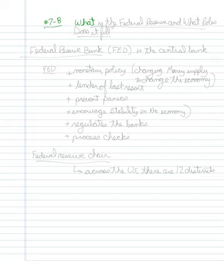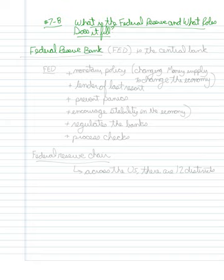Now we want to look at what is the Federal Reserve and what roles does it fill. The Federal Reserve Bank, which is sometimes referred to as the Fed, is the central bank. What it does is it coordinates every other bank, regulates every other bank, and basically engages in the monetary policy for the entire country.